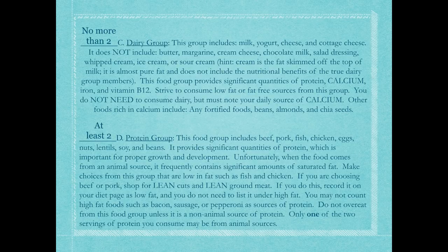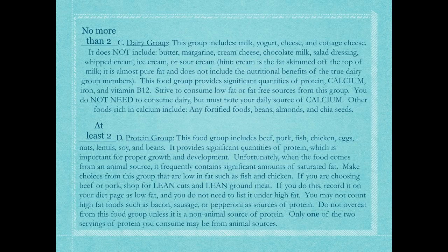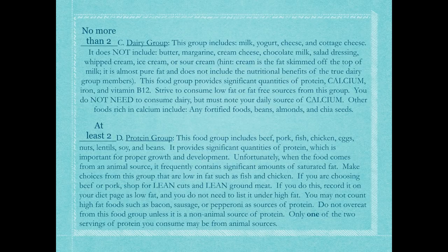High fat foods such as bacon, sausage, or pepperoni cannot count toward your protein group, because the saturated fat outweighs the protein benefit. Do not overeat from this group. Only one of your two required servings of protein may come from an animal source per day. I challenge you to have no meat in the day, but I won't force you to go vegetarian. If you go over one serving of meat, points will be deducted. Use these five days to explore plant-based protein sources like legumes, soy, lentils, and nuts.